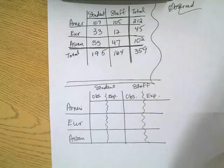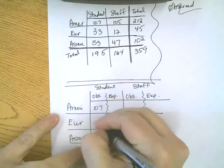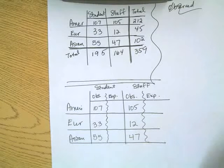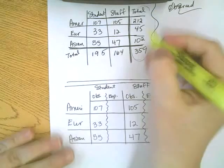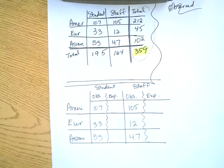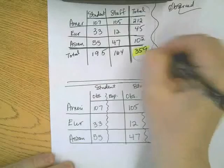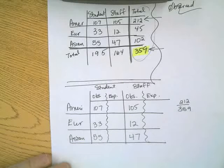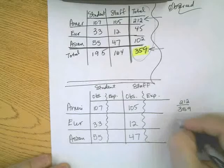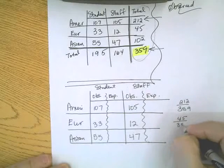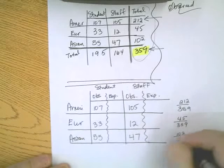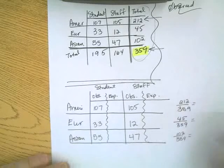The observed values for students are 107, 33, and 55; for staff they are 105, 12, and 47. To find the expected values, I look at the total of 359. For American-made cars, I expect 212 out of 359; for European cars, 45 out of 359; and for Asian cars, 102 out of 359. You can use those as fractions or convert to percents.